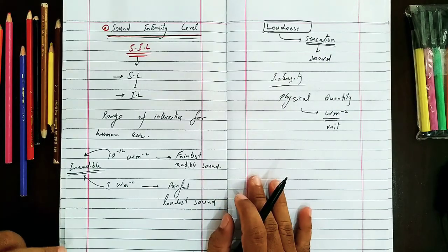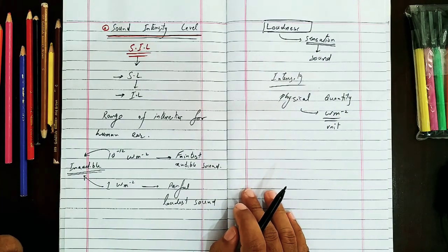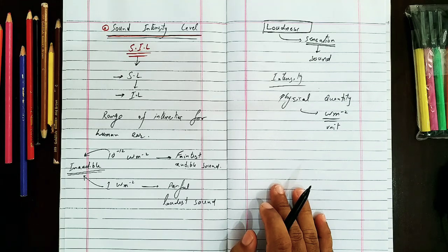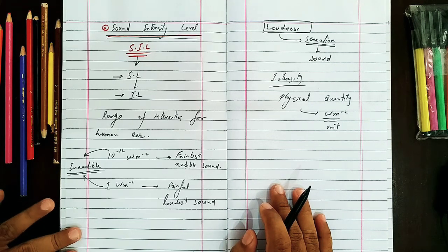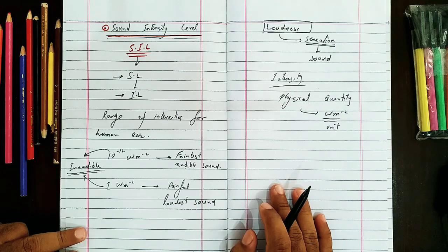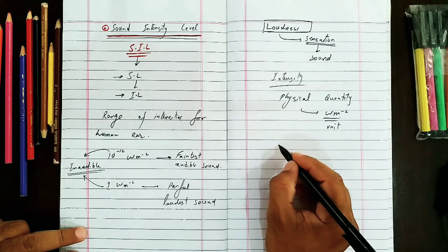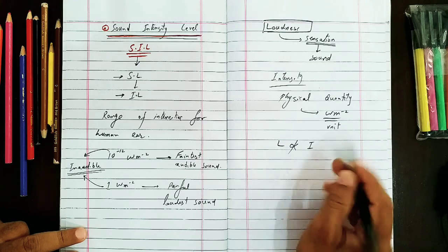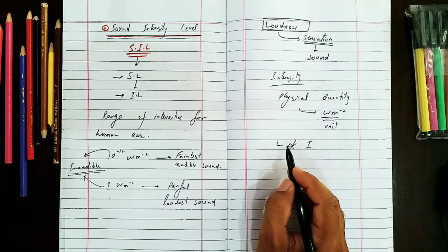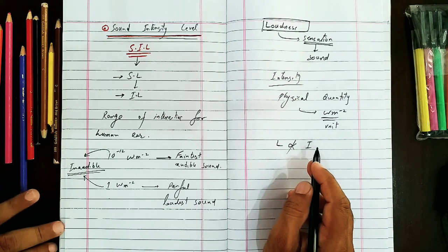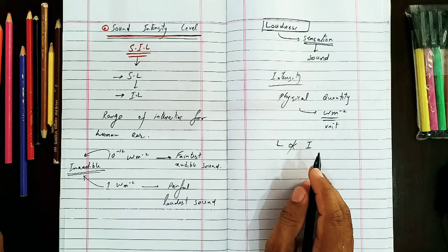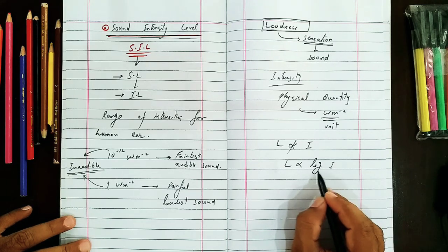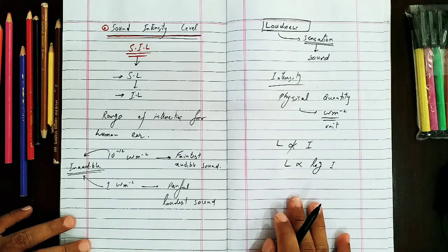Loudness has no unit because it is not a physical quantity. Loudness and intensity have a logarithmic relationship — this is a logarithmic scale. Loudness is not directly proportional to intensity; loudness is directly proportional to the log of I. If we take the log of intensity, the loudness is directly proportional.